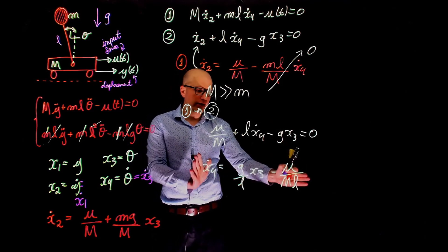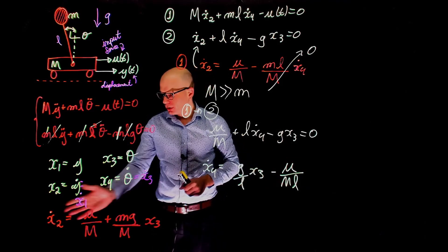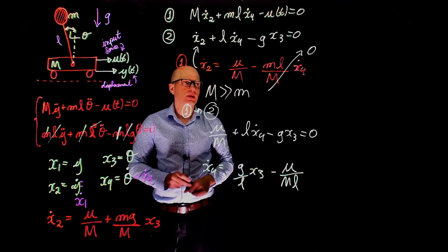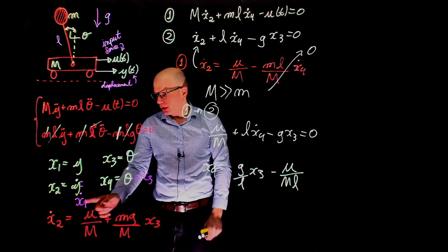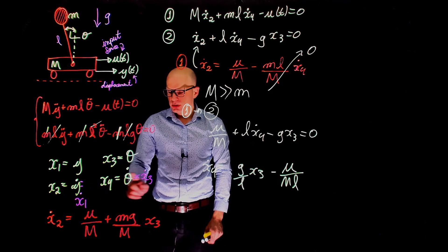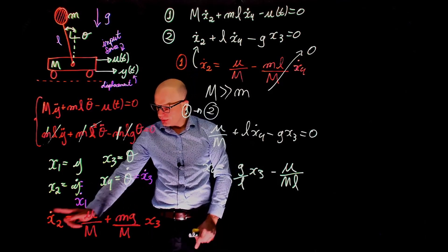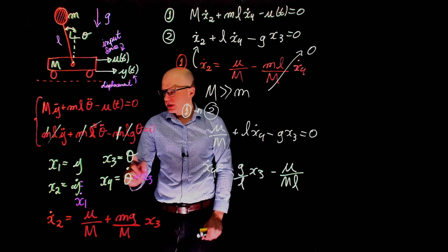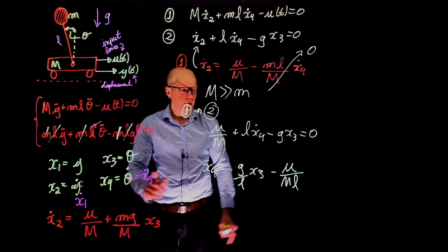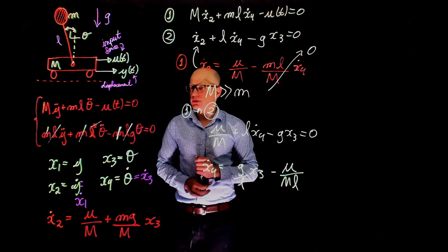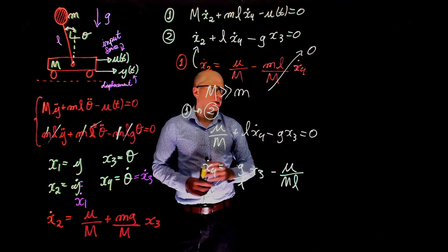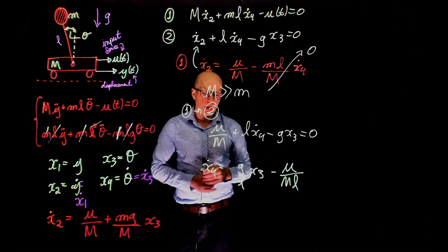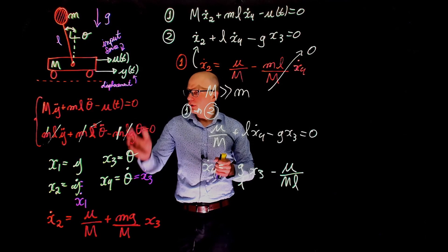This is the expression for x4 dot. And here we have now the last expression that we needed in order to represent this system in a state space. The first equation is x1 dot equals to x2. Second one is x2 dot from here. The third one is x3 dot equals to x4. And the fourth one is x4 dot. So now let's erase this and finally write the system of equations as a function of these state variables.